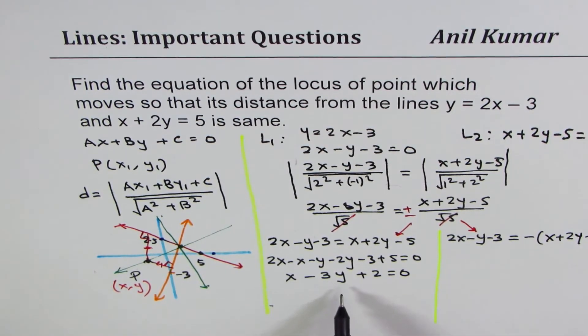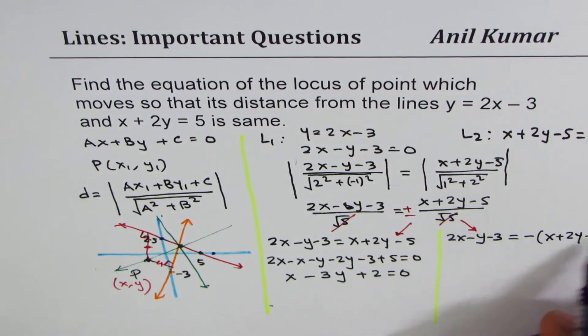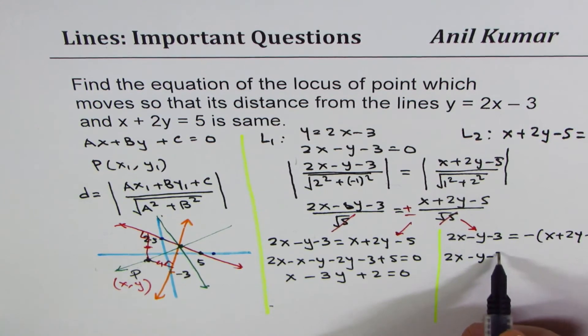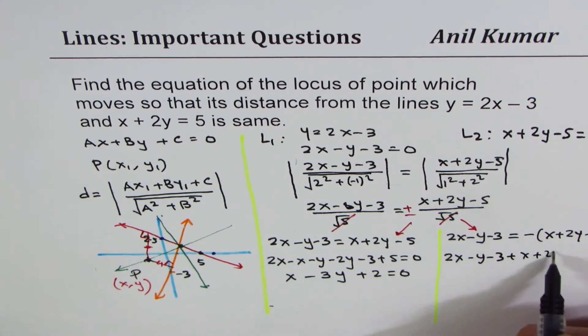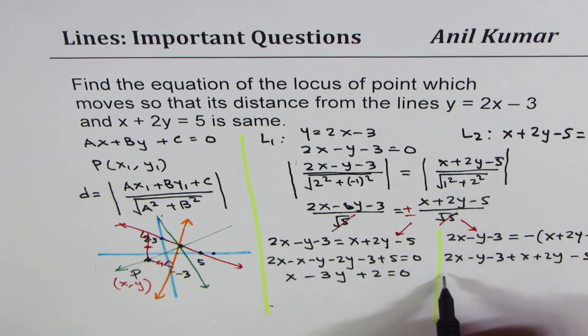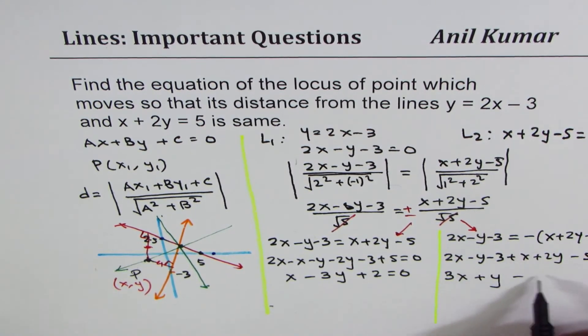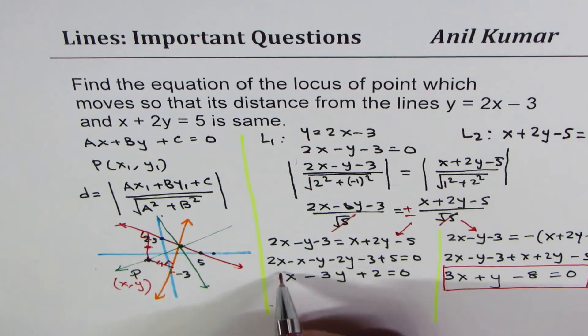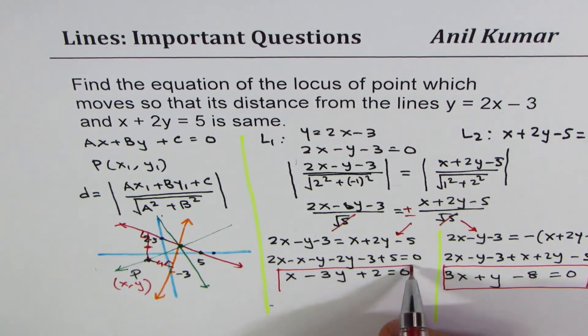That becomes one equation. The other one is when you bring these terms, that negative becomes positive, so we just copy them as such. We have 2x minus y minus 3 and we have plus x plus 2y minus 5 equals 0. 2x plus x is 3x, minus y plus 2y is plus y, minus 3 minus 5 is minus 8. So that is the second equation.